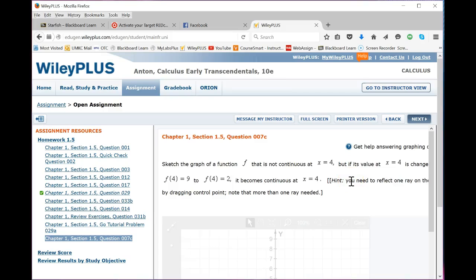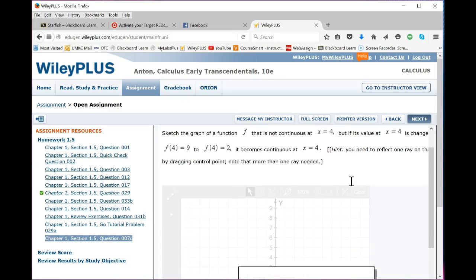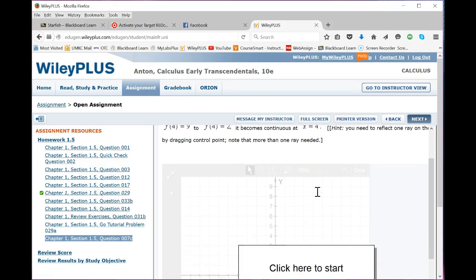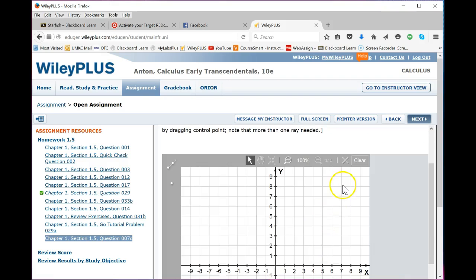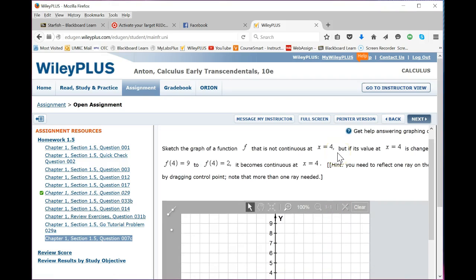The purpose of this video is to go over question 7c on 1.5. This is a graphing function and we're going to graph a function that's continuous at all points except x equals 4.